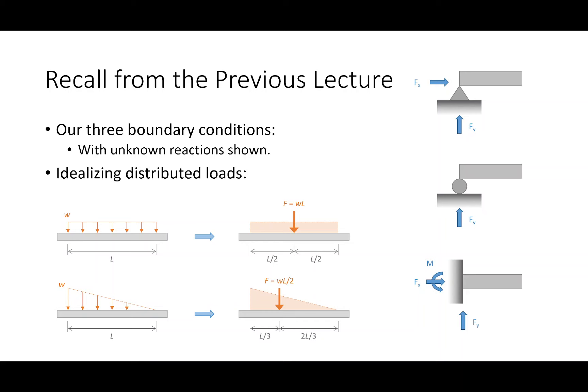We take the magnitude of the load as the area of the load shape. For a uniformly distributed load it's length times height, where height is the magnitude. For a linearly distributed load it's one-half base times height because it's a triangle. Then we locate that load at the centroid of that shape — for a uniform load that's in the middle, for a triangular load it's one-third away from the tall end.